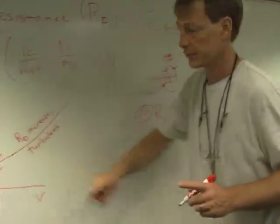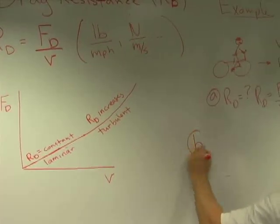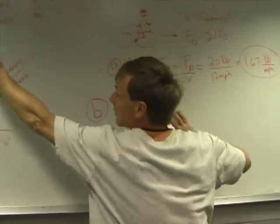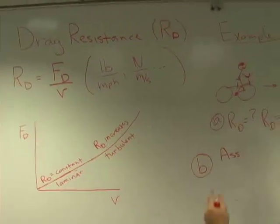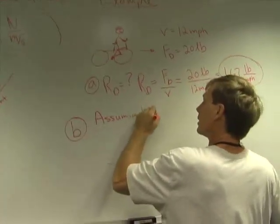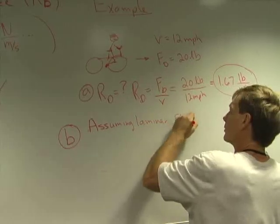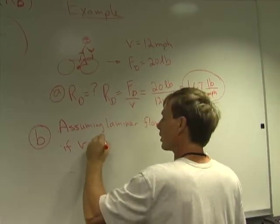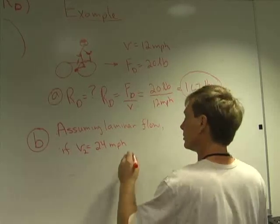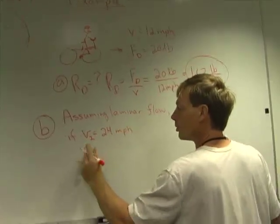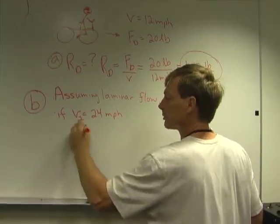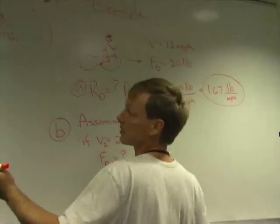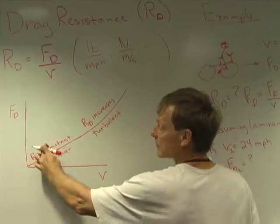Now, let's just use this graph for good instead of evil. Let's try using it out here. B, assuming laminar flow, I've figured out my drag resistance at 12 miles per hour. I know as I increase the velocity, the drag force is going to go up. So assuming laminar flow, if I increase my velocity to 24 miles per hour, I'll call it V2, what's the new drag force? Now, why did I say assuming laminar flow? Well, because it's easier to do. Look what happens. If I'm in laminar flow, the drag resistance stays constant.